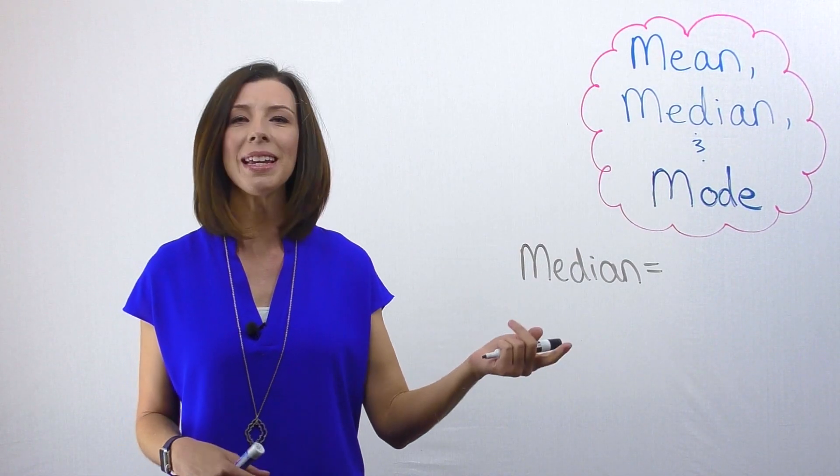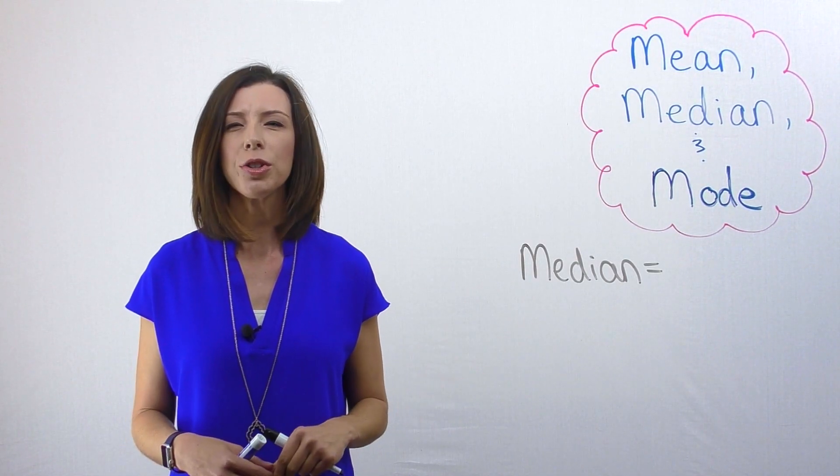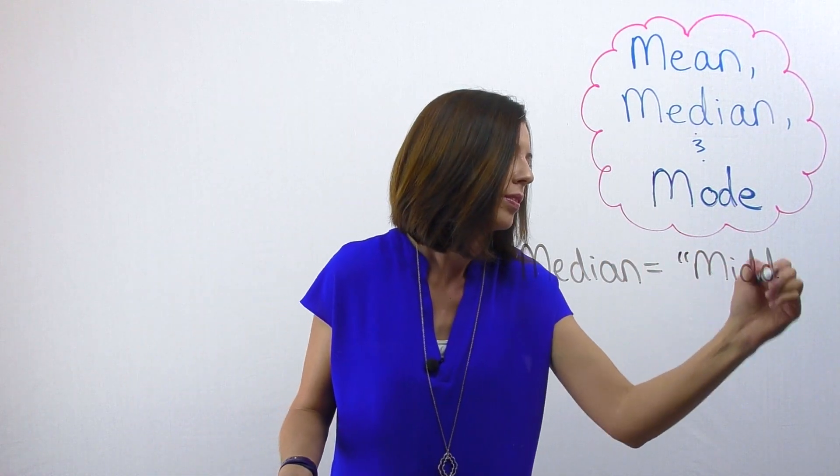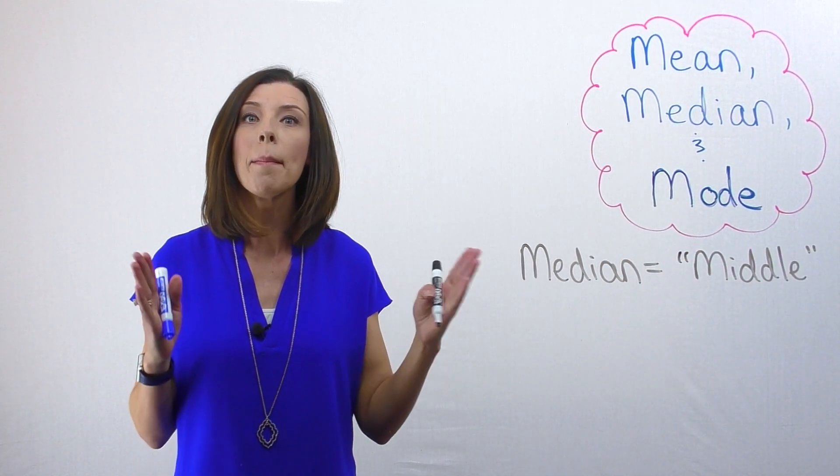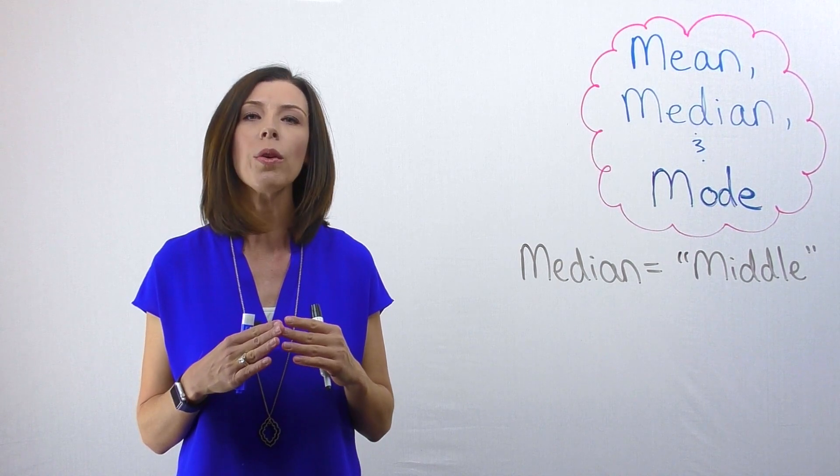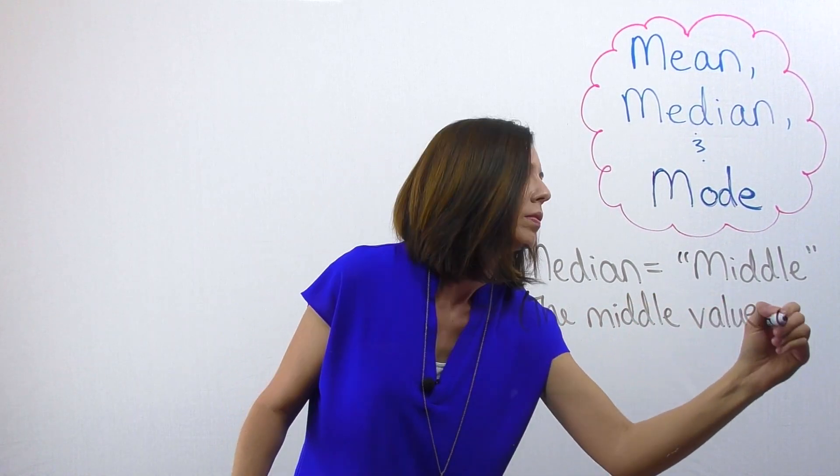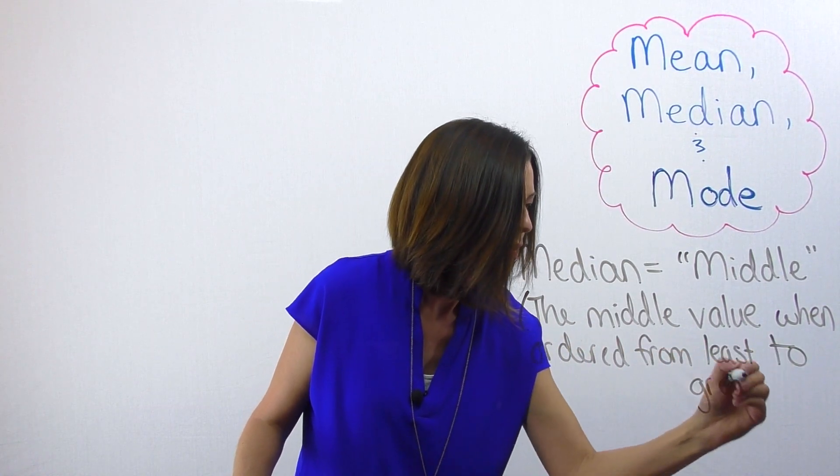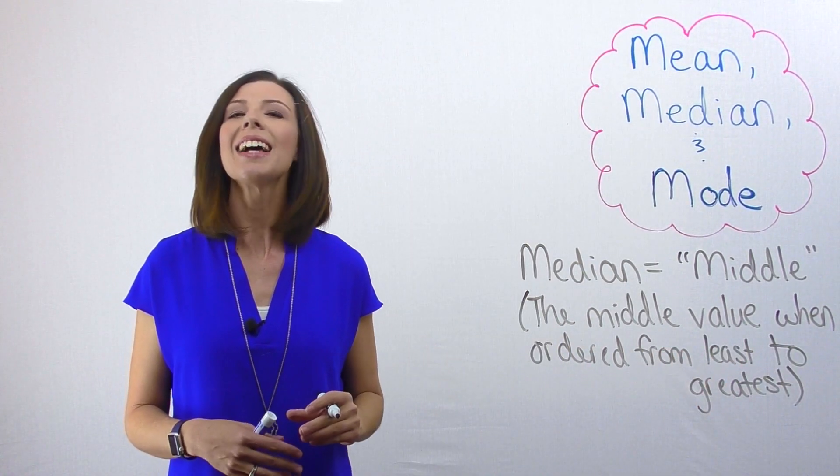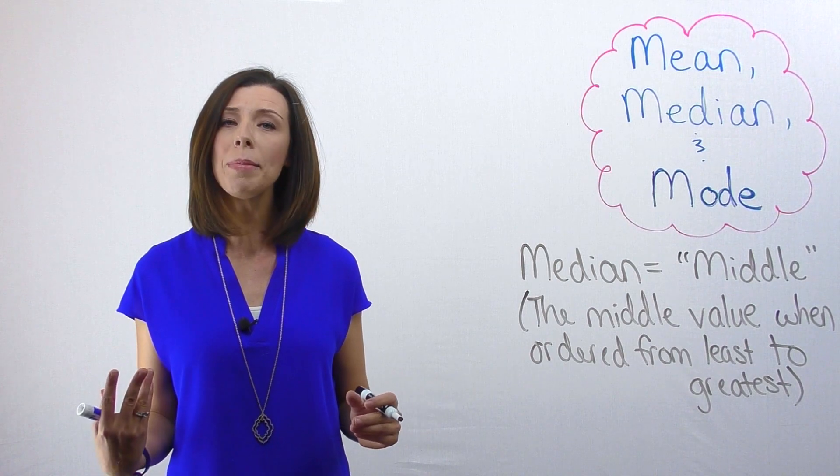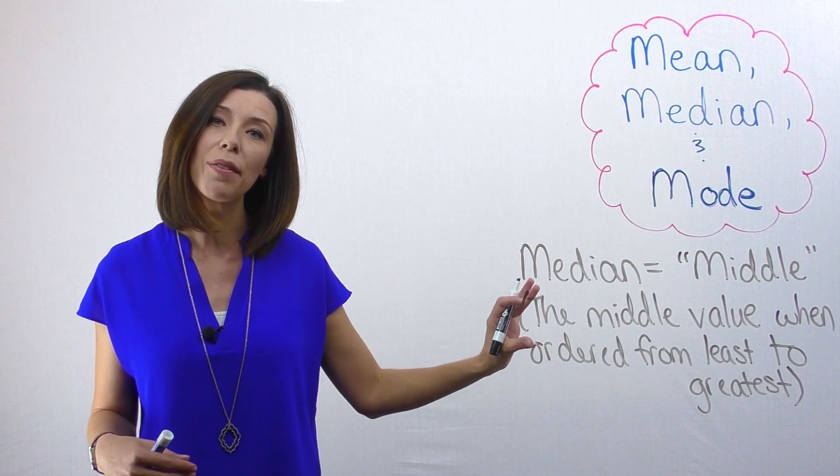Next, let's talk about the median. When I say median, I want you to think the middle. The median is literally the middle data point when we order our data from least to greatest or greatest to least. We can also think of this as half of our data is below the median and half of our data is above the median.